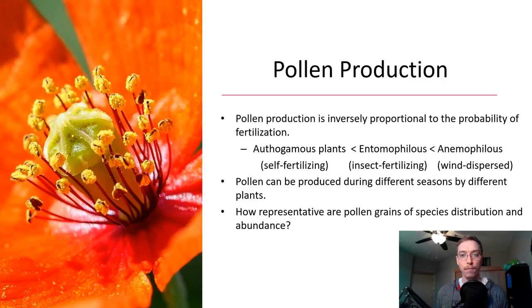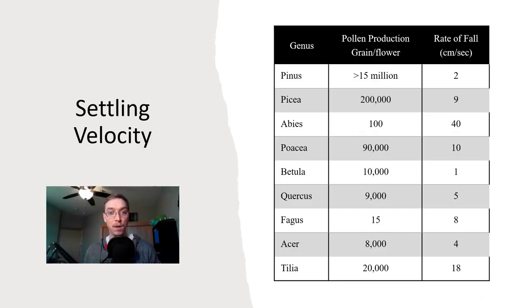Pollen production is inversely proportionate to the probability of fertilization. If you look at autogamous plants, self-fertilizing plants, more than or less than if you were looking at an entomophilous plant, insect fertilizing, or an anemophilous plant, wind dispersed pollen. Pollen can be produced during different seasons by different plants. So we ask how representative are pollen grains of species distribution and abundance?